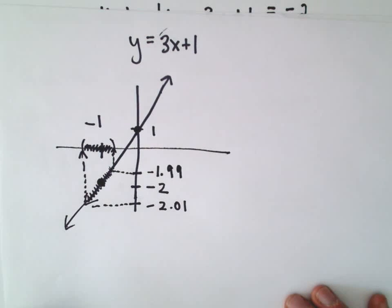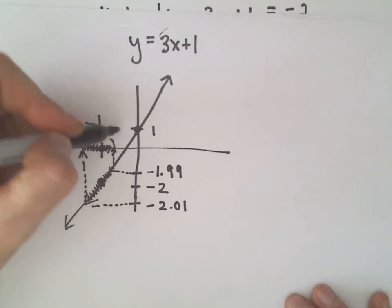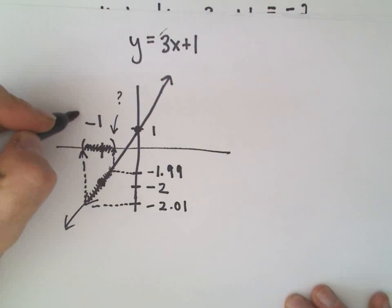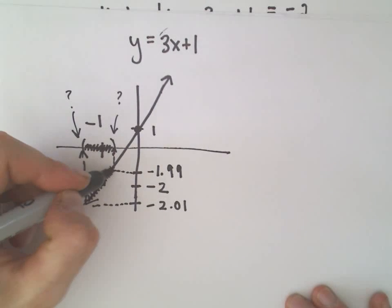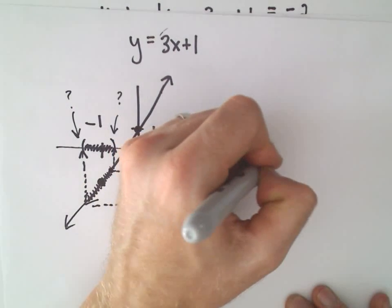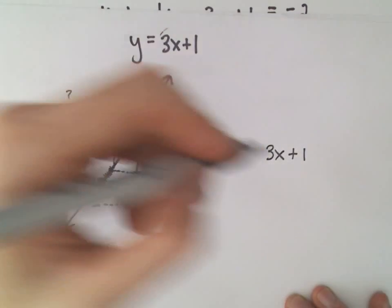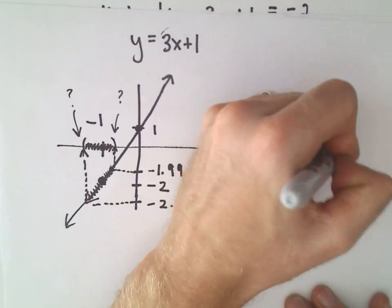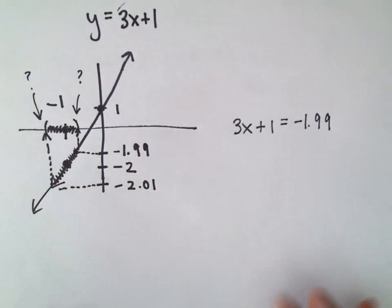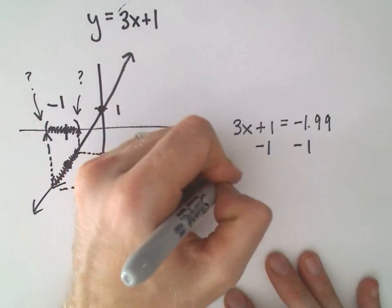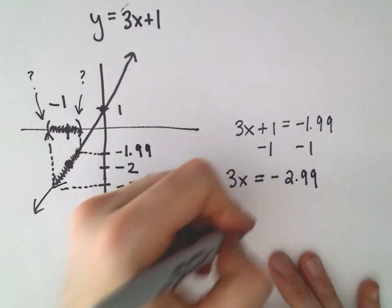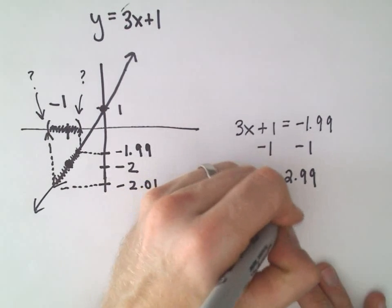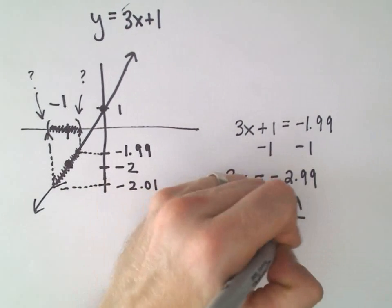Okay, well, in this case, again, the way that we're going to do it is we're just going to figure out what the x coordinate to the right of negative 1 is, and we'll figure out what the x coordinate to the left of negative 1 is, just by setting things equal. So if the y coordinate were going to equal negative 1.99, we can just take our function 3x plus 1, set that equal to negative 1.99, and now we'll just do a little bit of algebra. We can subtract 1 from both sides. That'll give us 3x equals negative 2.99, and then when we divide by 3, we'll just get negative 2.99 divided by 3.